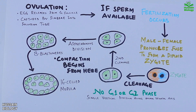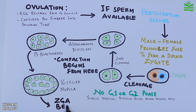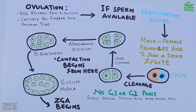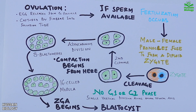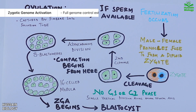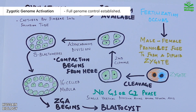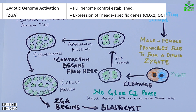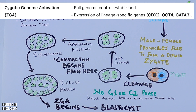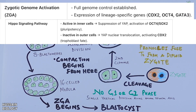From here we get zygotic gene activation (ZGA), which transitions the morula into the blastocyst. At the end of cleavage we see various activities turned on: first is ZGA where full genome control is established, followed by expression of lineage-specific genes like CDX2, OCT4, and GATA3. Then we have activation of the Hippo signaling pathway in inner cells but deactivation in outer cells.